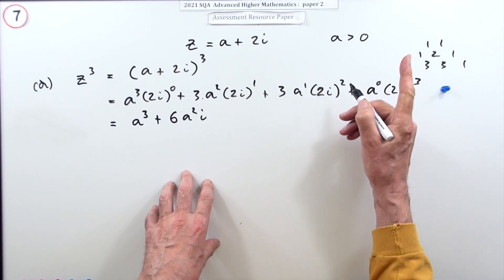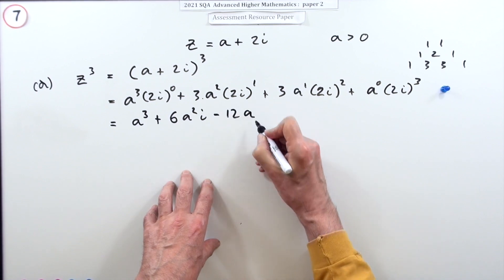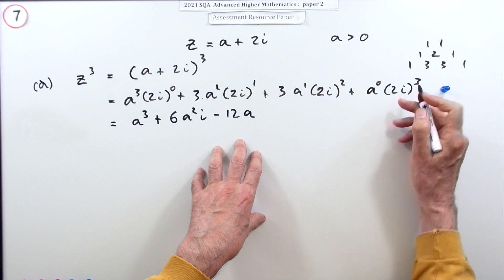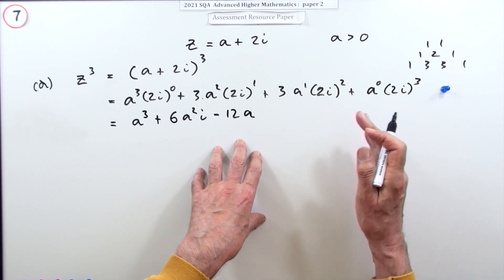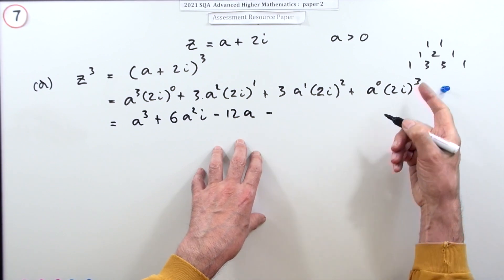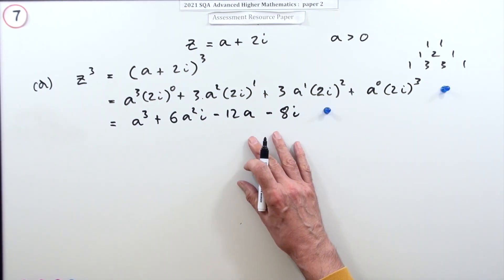Last one, i cubed would be i times i times i: negative one times i, so that's minus 8i. So that's the second mark for completing and tidying up the binomial expansion.